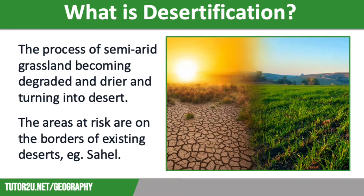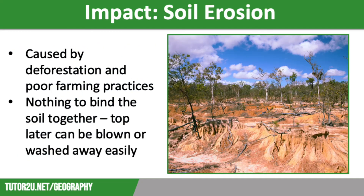Desertification in semi-arid areas such as the Sahel has many impacts on both a local and global scale. The first impact is soil erosion. Soil erosion is caused by deforestation as well as poor farming practices. Deforestation removes the leaf canopy which would have shaded the soil below and stopped it drying out. This means there is no leaf litter to return nutrients to the soil, making it dry out, and no roots to bind the soil together, so the top layer can be blown or washed away easily.